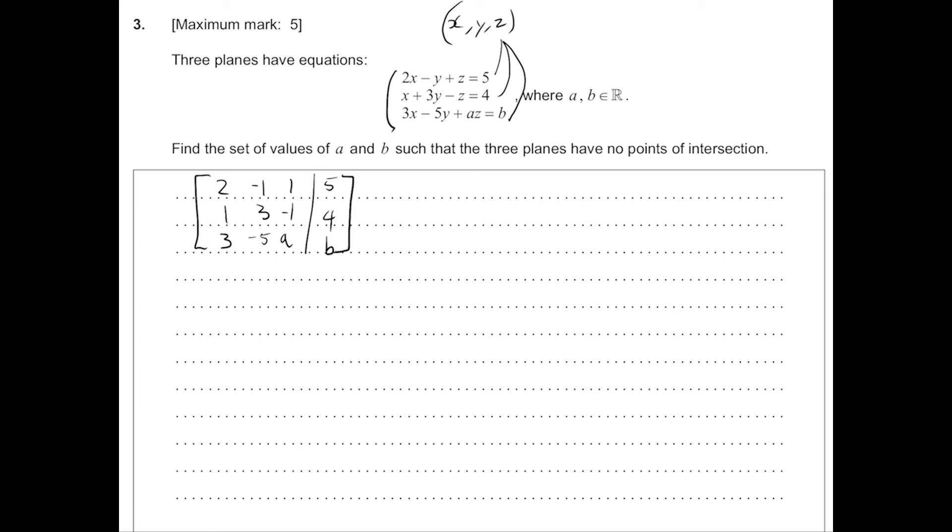And we're going to perform a bunch of row operations that don't change the final solution of x, y, and z. So row operations can be switching rows, multiplying scalars to the rows, and adding the rows together.